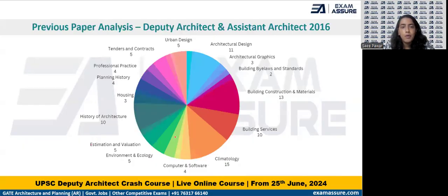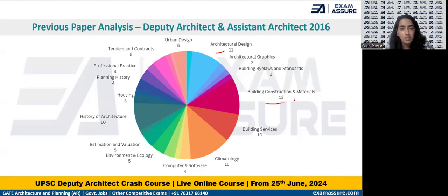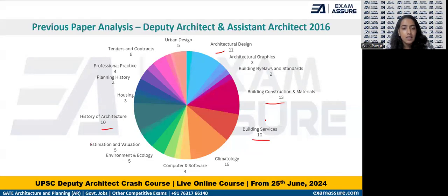Similarly, in the 2016 paper of Deputy Architect and Assistant Architect, there were 11 questions from architectural design, around 13 questions for building construction materials, roughly 10 questions for history of architecture, another 10 questions for building services, and then a roughly equal distribution for the rest of the topics.